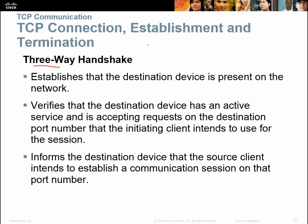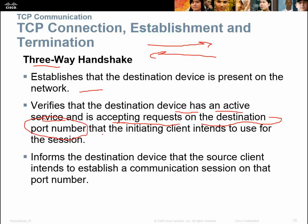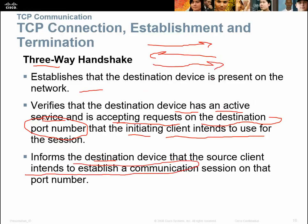It establishes that the destination device is present on the network and says, hey, I need to send some packets to you. I need to send some information — are you there? It gets a return back saying yes. It verifies that the destination device has an active service accepting requests on the destination port number, and informs the destination device that the source client intends to establish a communication session on that port number. Then it sends another acknowledgement confirming it received the response.